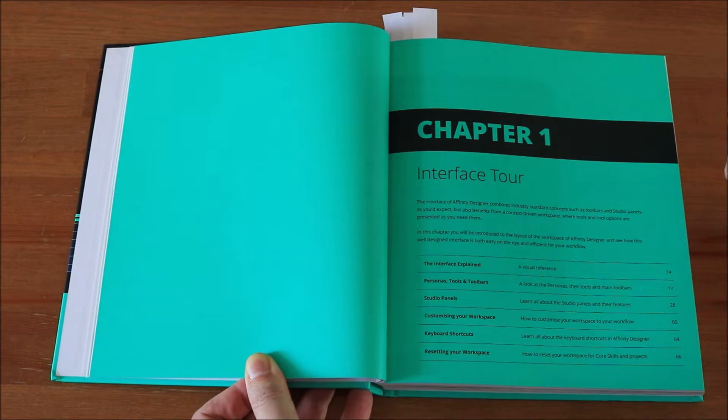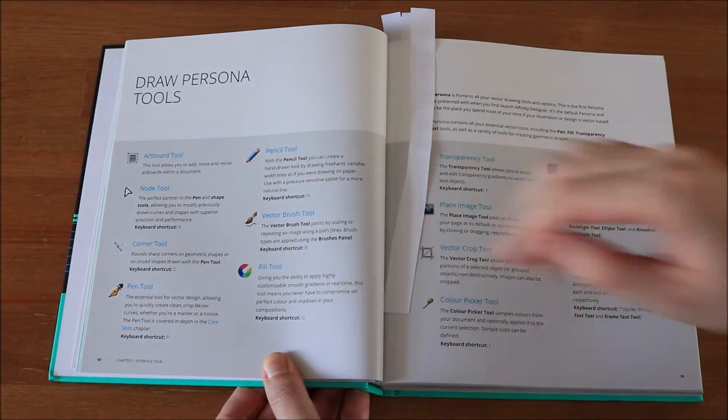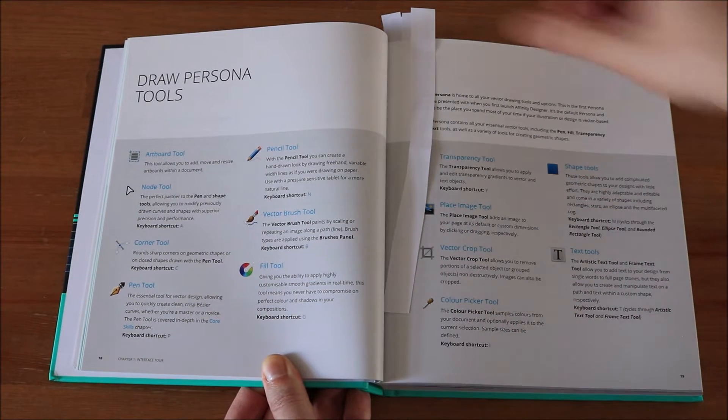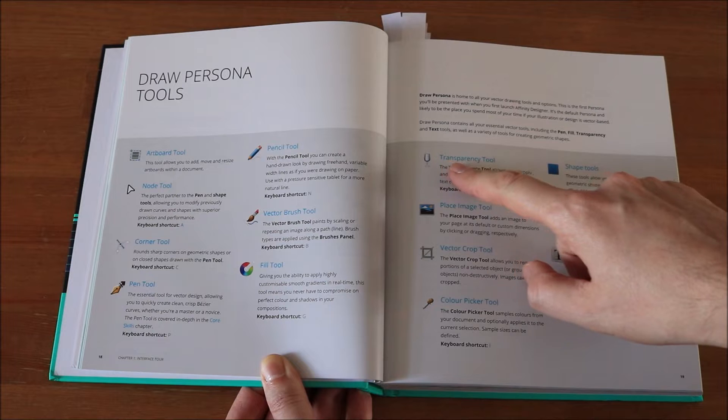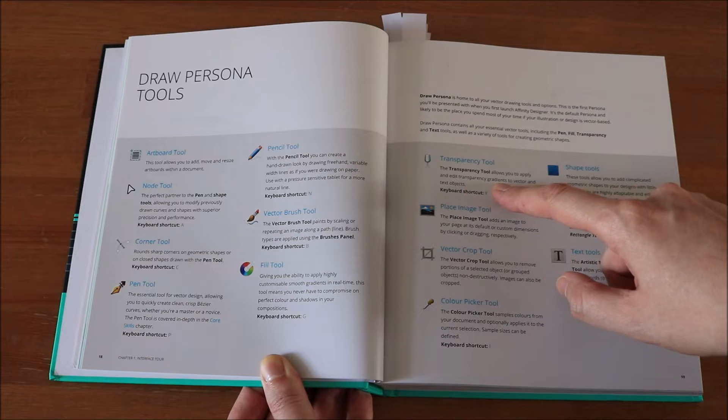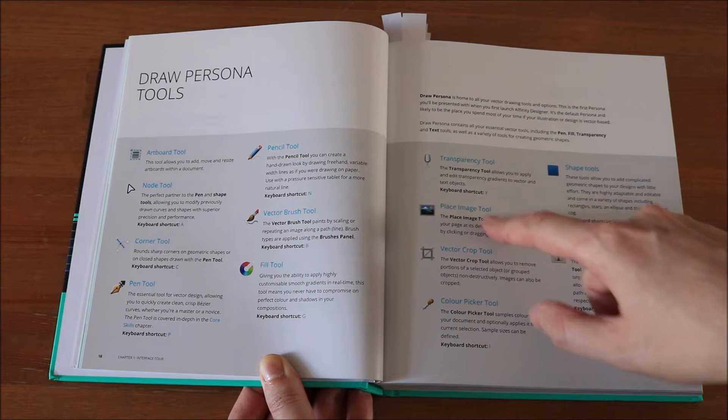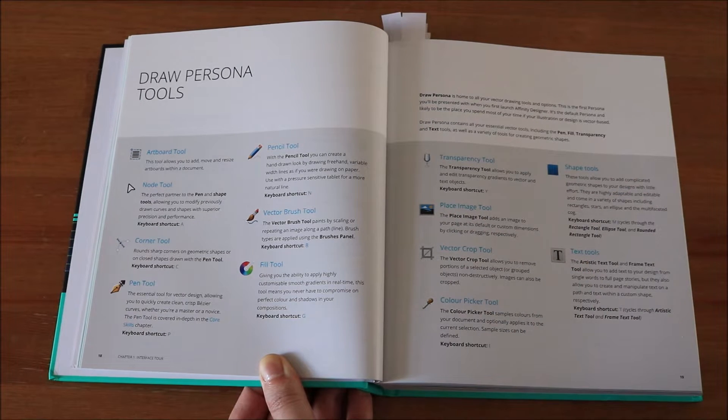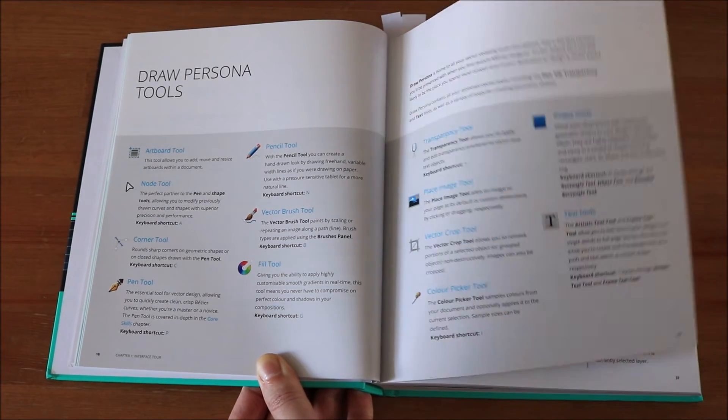And after that comes basic skills. And then you have artistic projects. And after that you have commercial designer projects, logo apps, stuff like that. So let's have a look in here. Here you can see there is every tool explained that you see on the surface and the explanations again are very to the point and very nicely done. For example, here it says transparency tool. The transparency tool allows you to apply and edit transparency gradients to vector and text objects. Keyboard shortcut epsilon. So really to the point and very clear in the description.